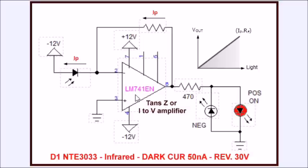Of course, an LM741 is not a very fast op-amp. There are other op-amps you can choose from if detection speed is important. In this case the output is once again IP times RF, and it switches on the positive LED indicator.